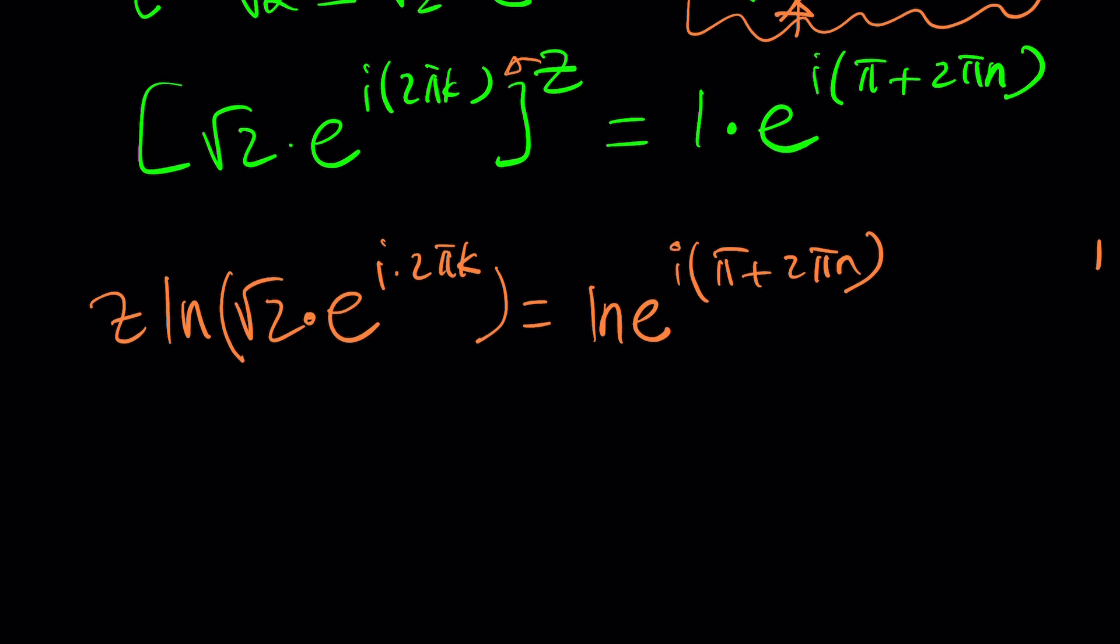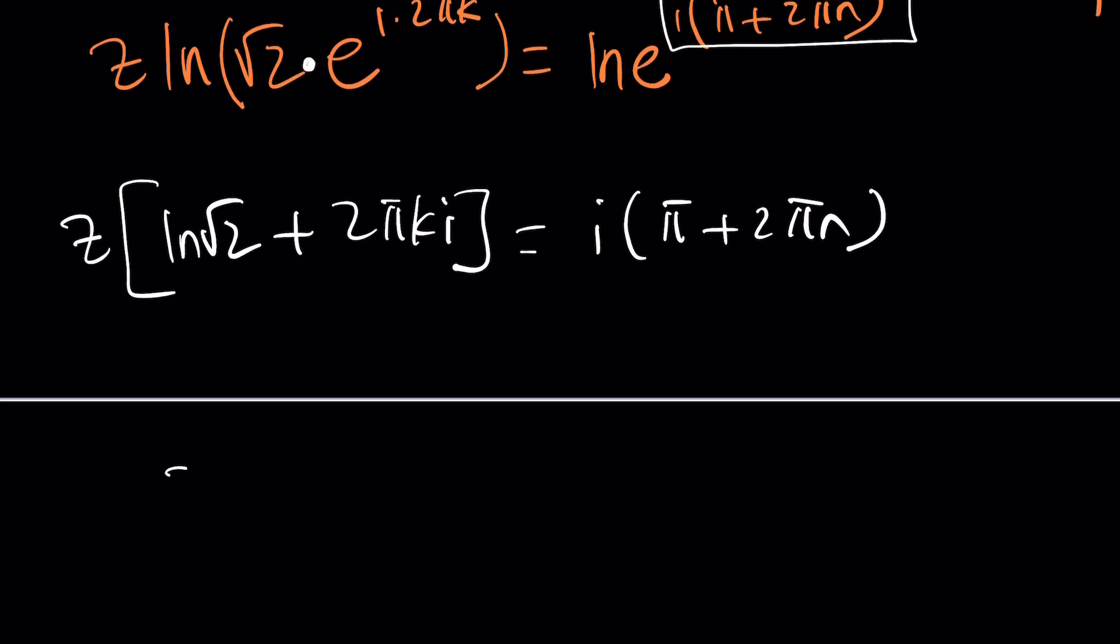K and n are integers by the way. From here you can basically isolate z by division. What is ln e to the power something? It's that thing. Here we have the ln of a product so we need to separate them. This is going to be ln root 2 plus 2 pi k i equals i times pi plus 2 pi n, and finally we can divide both sides to get z equals i times pi plus 2 pi n divided by ln root 2 plus 2 pi k i.